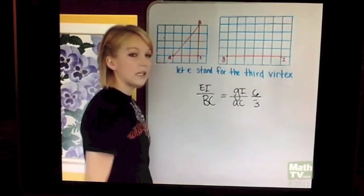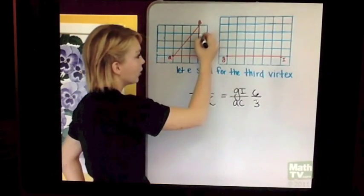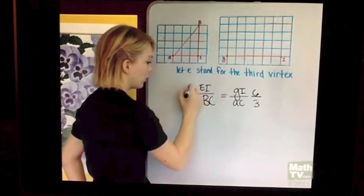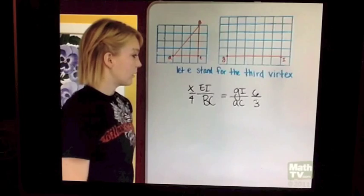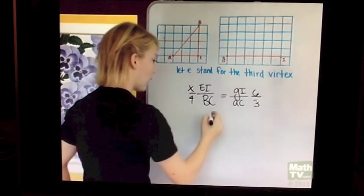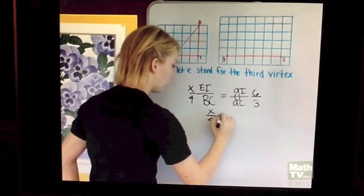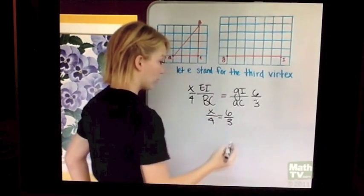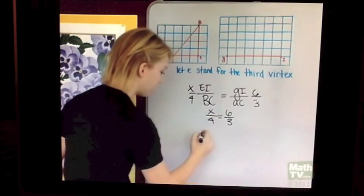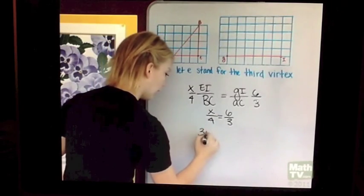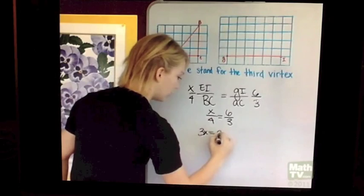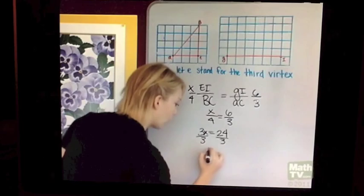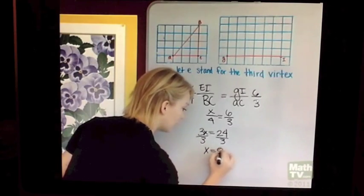We're not sure what EI is, but we know that BC is 1, 2, 3, 4 squares apart. We'll let X stand for EI. Now we have original problem. X over 4 equals 6 over 3. We'll cross multiply. This will give us 3X equals 24. We'll divide by 3. X will give us 8.